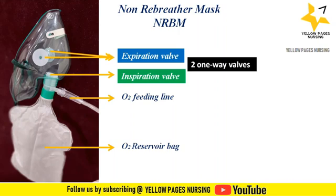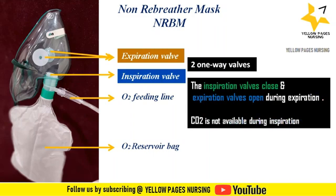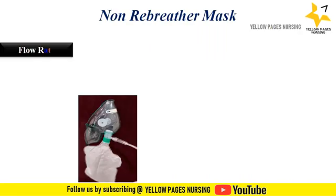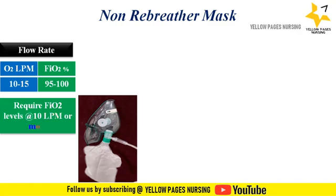The inspiration valve sits between the face mask and the reservoir bag attached to oxygen supply; it does not allow exhaled or outside air from entering the bag, so only oxygen flows from the bag to the mask. The expiration valve allows exhaled air to flow into the atmosphere but does not allow outside air to enter. During exhalation the inspiration valve closes and the expiration valve opens, so CO2 is not available during inhalation. Flow rate is 10 to 15 liters per minute, achieving FiO2 of 95 to 100%; a minimum of 10 liters per minute is needed to prevent rebreathing.